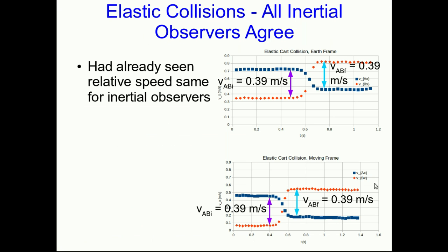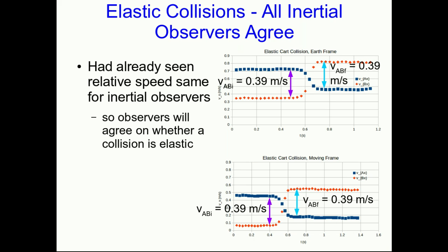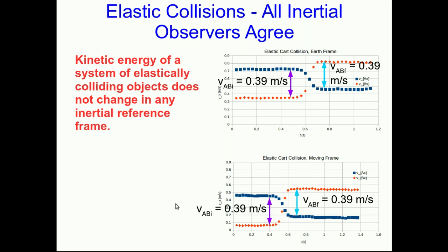We kind of already knew that all inertial observers will agree on whether a collision is elastic, because we know from the last lecture that all inertial observers measure the same relative speed between objects. And that was actually our definition of an elastic collision — that the relative speed doesn't change — so inertial observers are certainly going to agree on that. The relative velocity is formed by just the subtraction of the two velocities, and when you transform from one frame to another — say from the Earth frame to the moving frame C — the two VCEs that end up in here cancel out. We derived kinetic energy conservation from the relative speed not changing, and since inertial observers agree on the relative speeds, they've got to agree on the kinetic energy being conserved in an elastic collision.